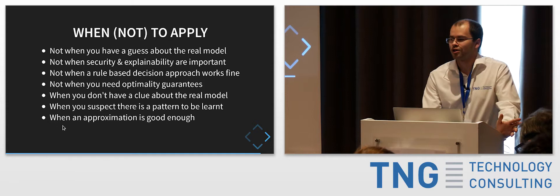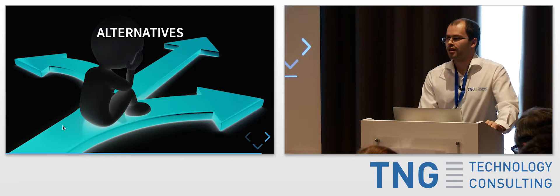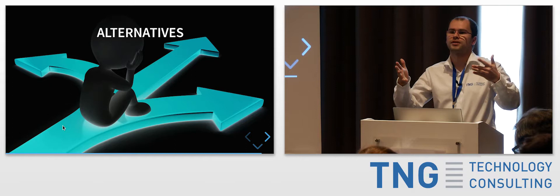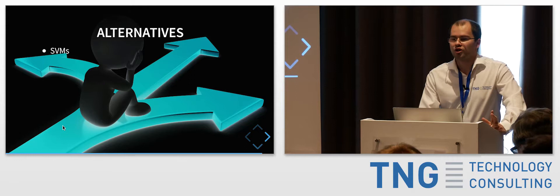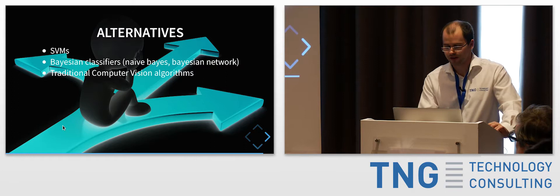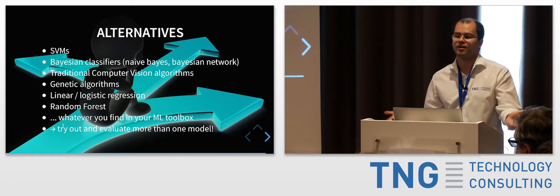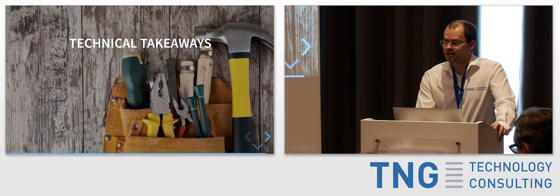There are also alternatives. The OpenCV library has around a thousand classical computer vision algorithms, for things like 3D reconstruction from stereo images — based on real physical models. Whatever is in your machine learning toolbox — SVM, Bayesian classifiers, regression methods, genetic algorithms, random forest methods — just try them out. Evaluate multiple models and compare results, because you can't tell in advance which will be best. And even when using your models, you need hyperparameter tuning.